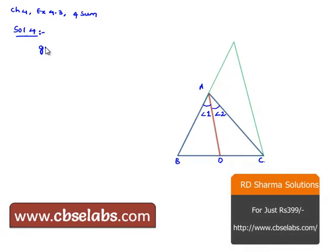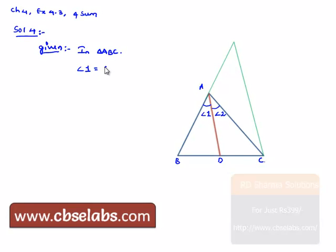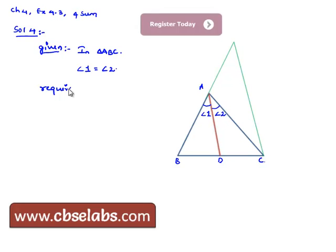Therefore let us note down the given information. That is, in triangle ABC as shown, he has given that angle 1 is equal to angle 2, therefore we can say that AD is the angular bisector and he asked us to prove that BD by DC is equal to AB by AC.